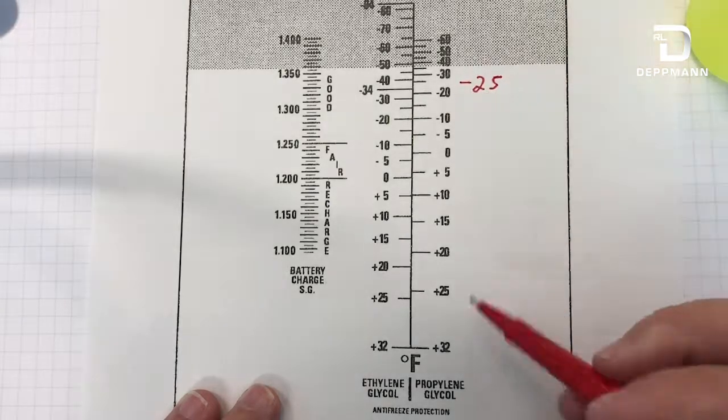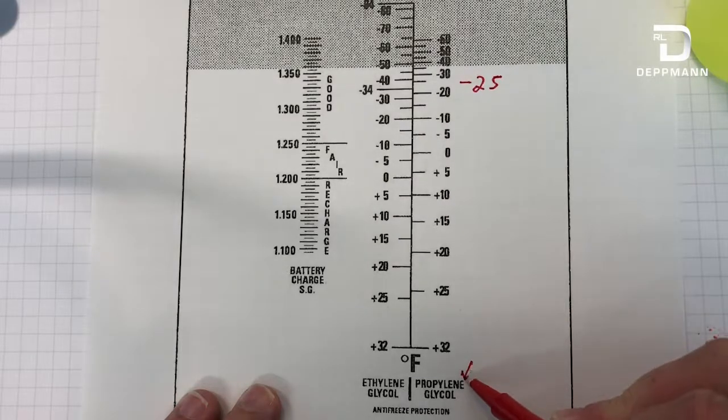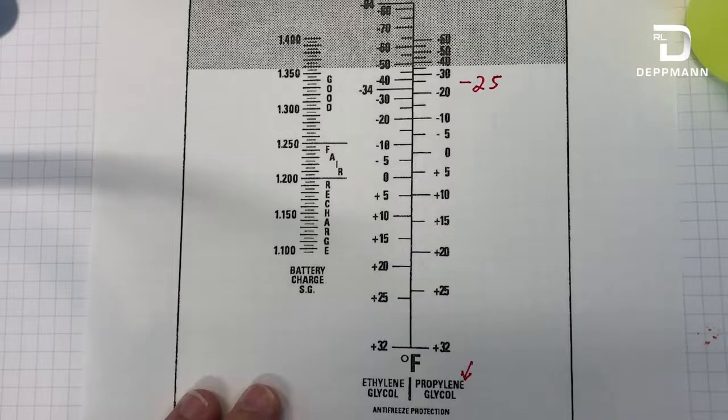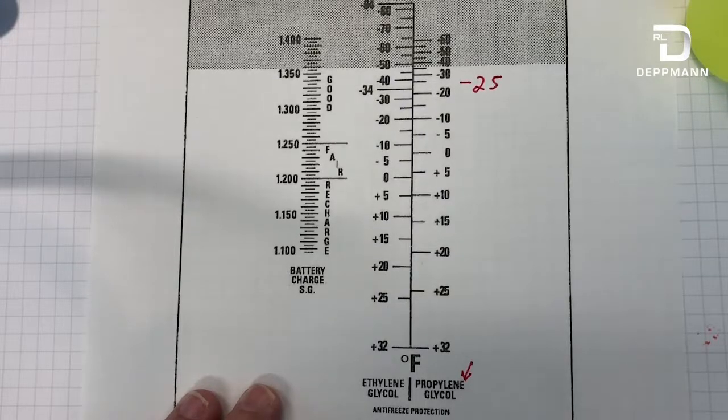So here I'm at 25 and I have propylene glycol in my system. Next, I will review another chart which will help me determine my current concentration level.